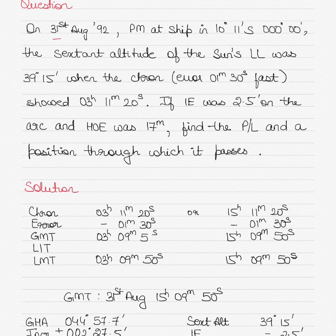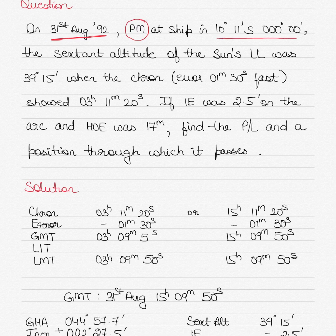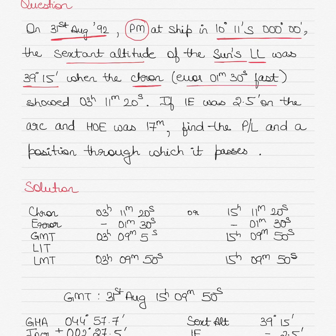The question states it is 31st of August 1992, and it is PM on your ship — so the local mean time is in the evening. The ship's position is 10 degrees 11 minutes south and 0 degrees longitude. The sextant altitude of the sun's lower limb was 39 degrees 15 minutes. The chronometer, with an error of 1 minute 30 seconds fast, showed 3 hours 11 minutes 20 seconds. The index error was 2.5 minutes on the arc, height of eye was 17 meters, and we need to find the position line and the position through which it passes.